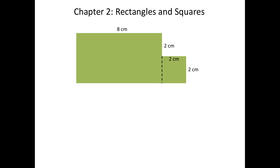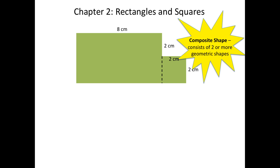As I mentioned, today we'll be learning three different methods for finding the area of a composite shape. Before beginning, let's go over what a composite shape actually is. A composite shape is a shape like the one drawn here. You can see it isn't just one rectangle or one square — it's actually a combination of the two. So a composite shape consists of two or more geometric shapes. In order to find the area of a composite shape, there's going to be more than one step.